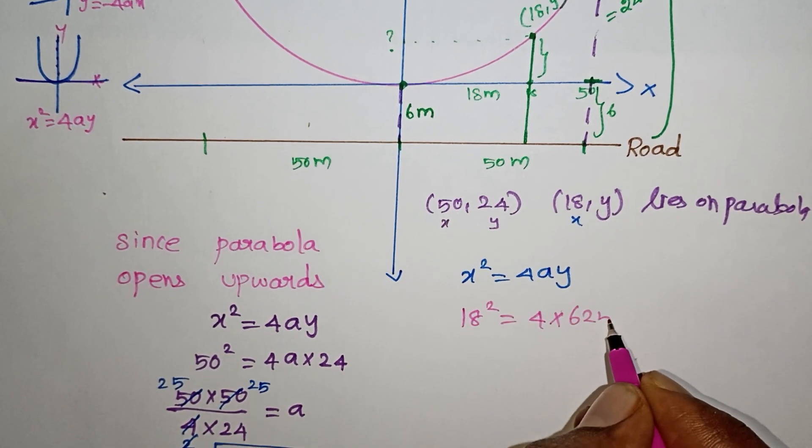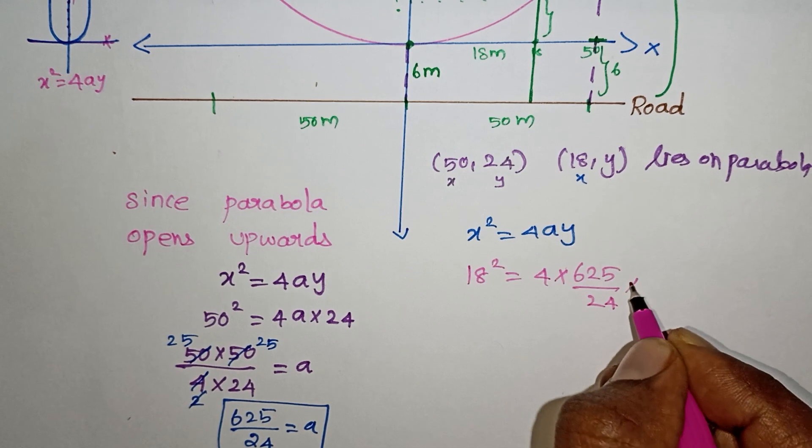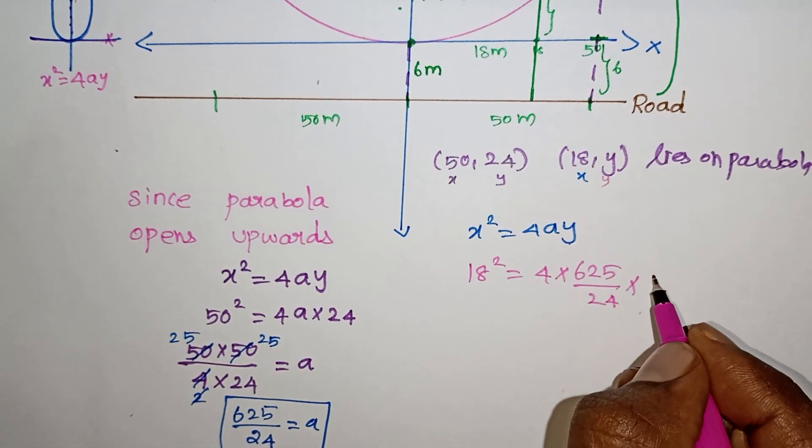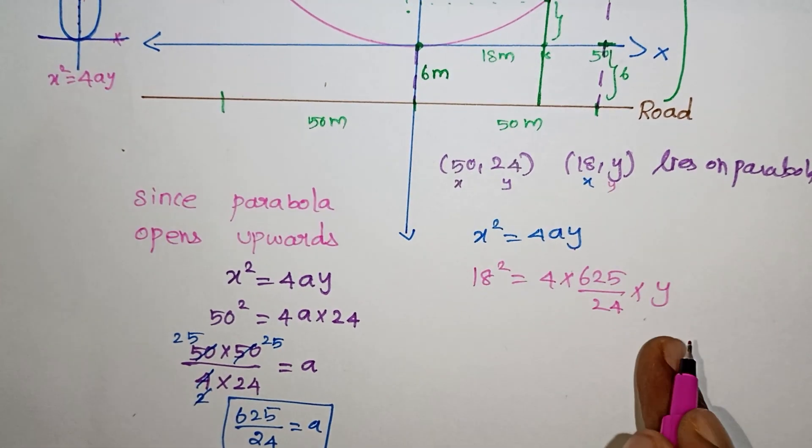Now substituting (18, y) into x² = 4ay: 18² = 4 × (625/24) × y, giving us 324 = (2500/24) × y, so y = 324 × 24 / 2500 ≈ 3.11.